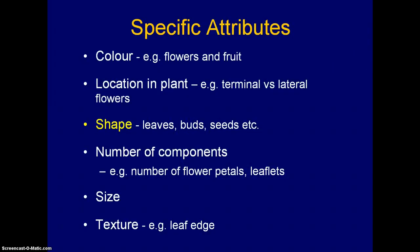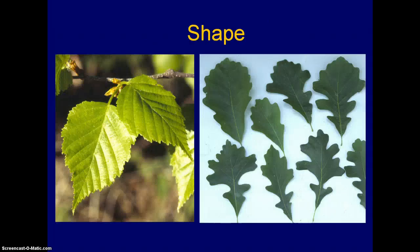Shape is a very important characteristic when identifying plants — the shape of various parts such as the leaves, the buds, and, as mentioned, even the seeds for taxonomists. Leaves are common, and we will return to going into more detail on leaf shape in the next video.